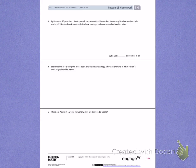Number 3. Lydia makes 10 pancakes. She tops each pancake with 4 blueberries. How many blueberries does Lydia use in all? Use the break apart and distribute strategy and draw a number bond to solve.